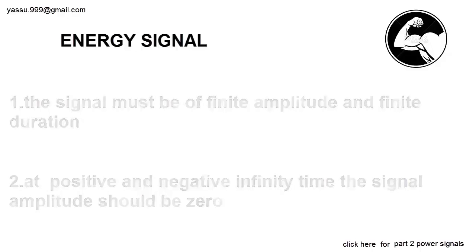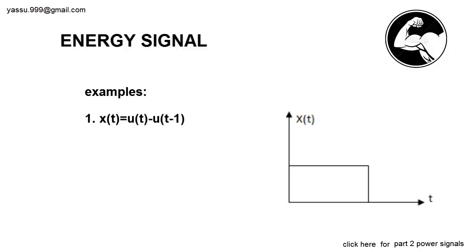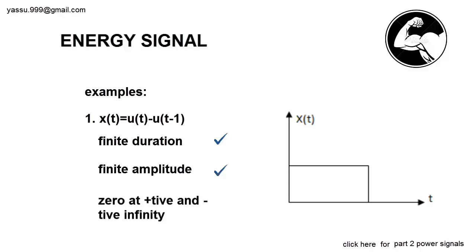So let's see some simple examples. Coming to example number one: x(t) = u(t) - u(t-1). Is it a finite duration signal? Yes, it is a finite duration signal since it is extending from 0 to 1. Is it having a finite amplitude in the given interval of time? Yes, it is having a finite amplitude. So at t tends to plus infinity and minus infinity, the amplitude is 0. So it satisfies all conditions — the given signal is an energy signal.